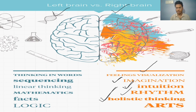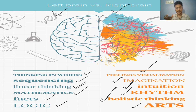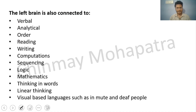Right brain is also associated with divergent thinking and arts. The left brain focuses on sequential, linear thinking and promotes mathematics. Left hemisphere controls facts, logic, and analysis. Left brain handles thinking in words, convergent thinking, and linear thinking — which we also define as logical and analytical thinking.